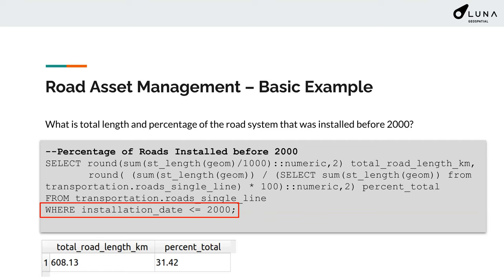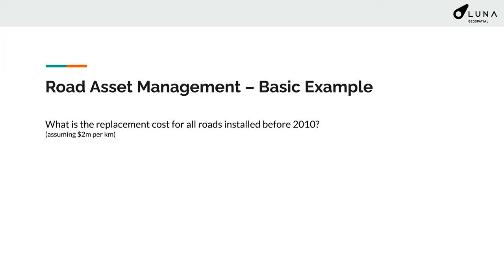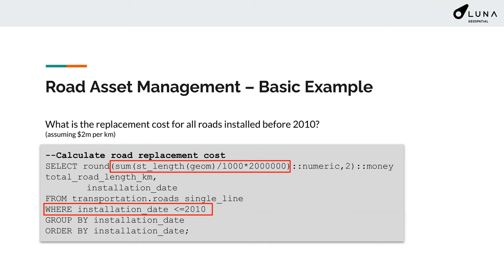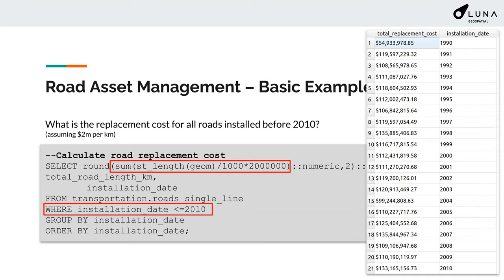What is the replacement cost for all roads installed before 2010? I assumed it would be about $2 million per kilometer — that sounded like a good number. We calculated the road replacement cost using the ST_Length function to get the length of the geometry, converted that to kilometers, and multiplied it by $2 million. Adding the WHERE clause to filter roads installed before 2010, we can get values and produce a very simple report.